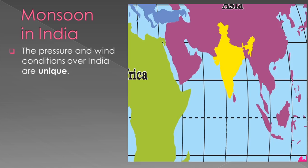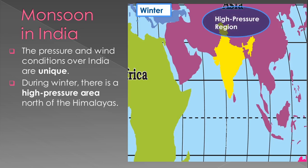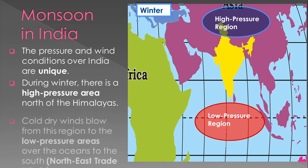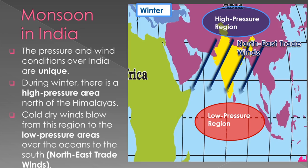India is surrounded by water from three sides. The pressure and wind system over India are unique. During winter, there is a high pressure area north of the Himalayas. Cold and dry winds blow over this region to the low pressure area over the ocean to the south. Northeast winds blow from the high pressure area to the low pressure area.